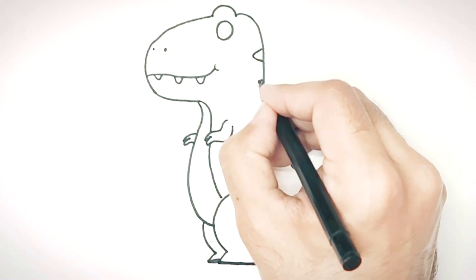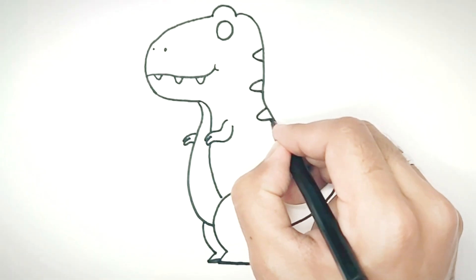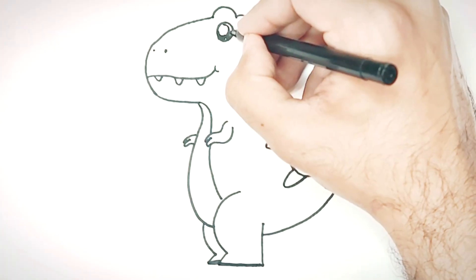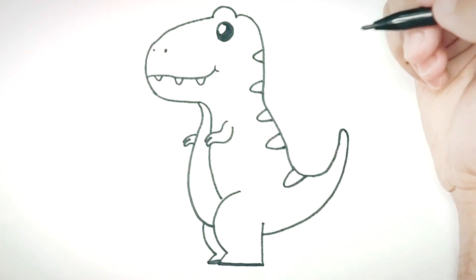Let's add some texture by drawing V-shaped lines on its back. Finally, fill in its eye with some black color but leave a circle shape for its shine.